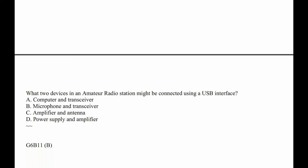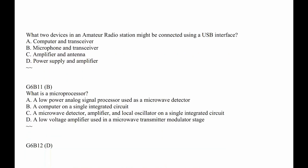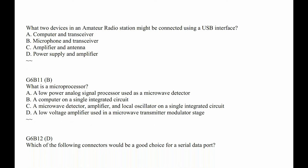G6B10. What two devices in an amateur radio station might be connected using a USB interface? Computer and transceiver, because oftentimes those things are connected together. Microphone — not likely. Amplifier — maybe. Antenna — not likely. Power supply — not likely. So it's A, computer and transceiver. G6B11. What is a microprocessor? It's a little computer — so it's A, a computer on a single integrated circuit.